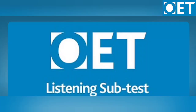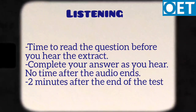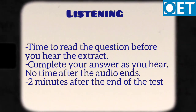OET listening subtest. Like reading, listening also has three parts: A, B, and C. You will get 40 minutes for 42 questions. You will get time to read the questions before you hear each extract. Complete your answers as you listen — there will be no time after the audio ends. Remember, you hear the audio once only. There will be two minutes at the end of the test to recheck your answers.